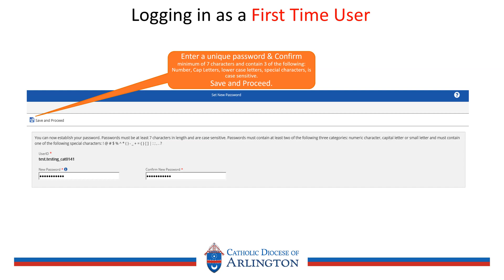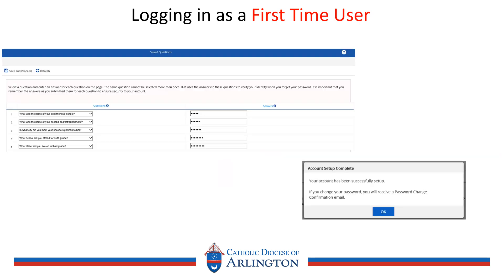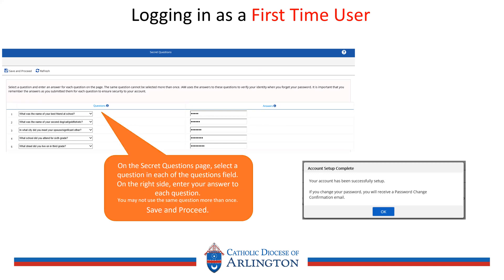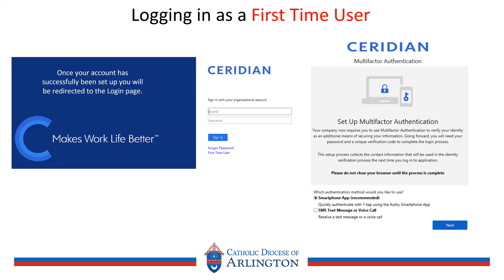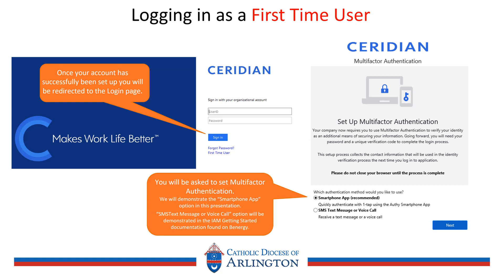You will then be asked to create a new password. Confirm the password, then click save and proceed. Your next step will be to set up your secret questions. Select five questions from the drop-down menu and key the answers into the fields on the right side. Click save and proceed. A notification informing you that your account was successfully set up will appear — click OK. You will then be redirected to the login page. Key your user ID and password and click sign in. Now you will be asked to set up your multi-factor authentication. This is a required step and must be set up.